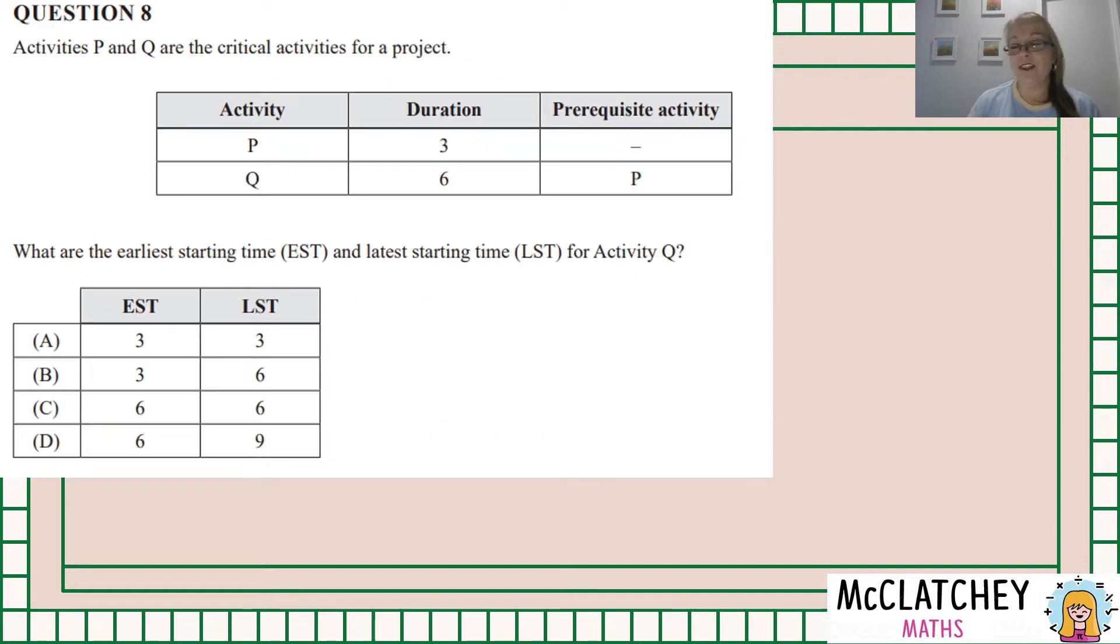And here's our second question for the video, question 8, activities P and Q. Now I know they're the same letters but they've got nothing to do with the other question. So put that one out of your mind, let's focus on this one, activity P and activity Q. One has a duration of three and we can see it's got no prerequisite which means it's a starting activity. And straight after this one happens, after P happens Q happens boom boom straight away. So because Q has a prerequisite it means it can't start until P is over which means Q can't start until three minutes has lapsed. So that's its earliest start time.